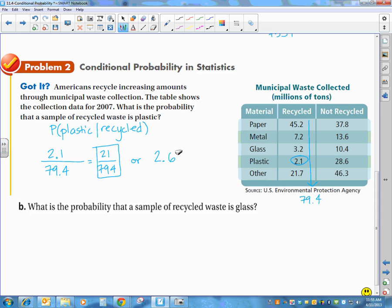That would be dividing and then move your decimal over two places to get 2.6%. Down here we have what is the probability that a sample of recycled waste is glass? We're looking for glass. So what's the probability of glass given that I have recycled waste? So my total recycled waste, we already figured out, was 79.4. What part of that is glass? 3.2.